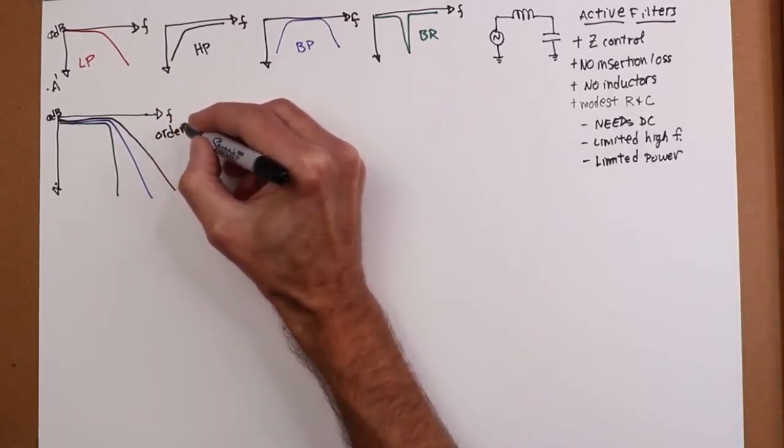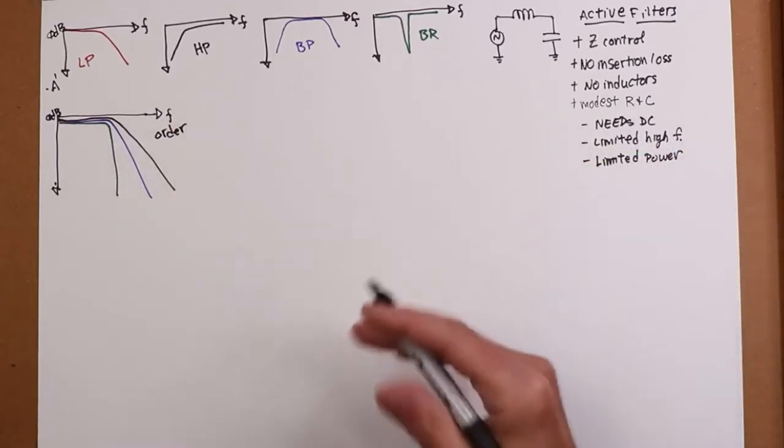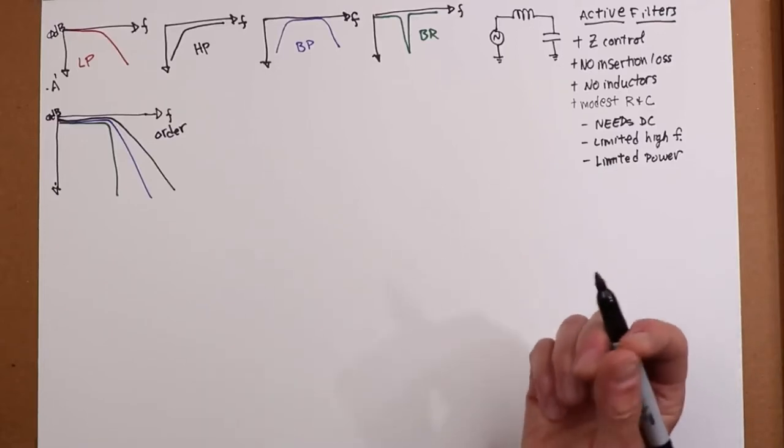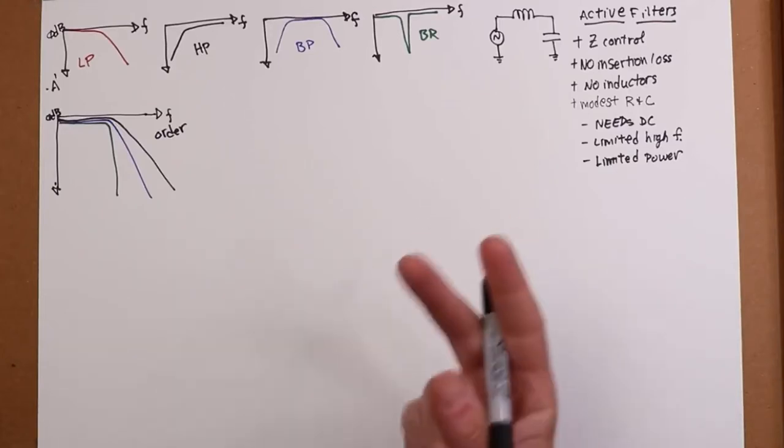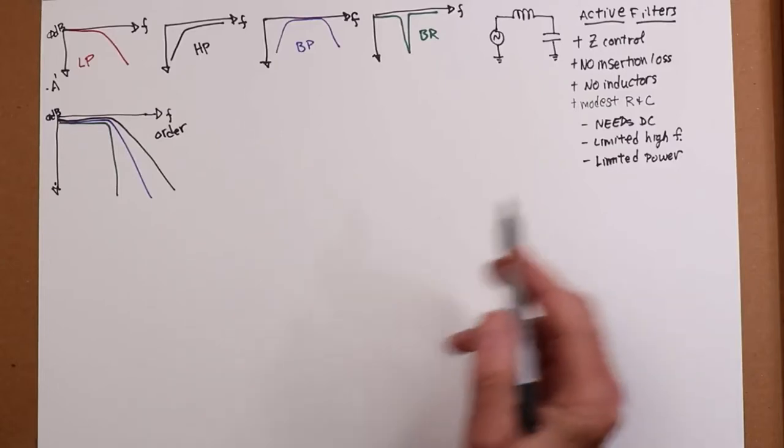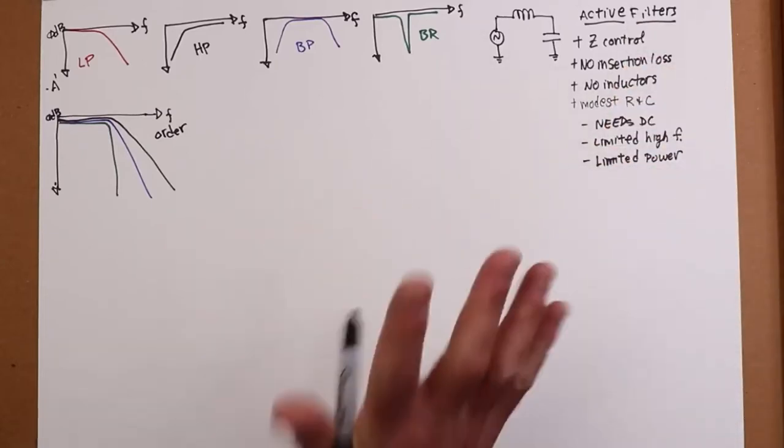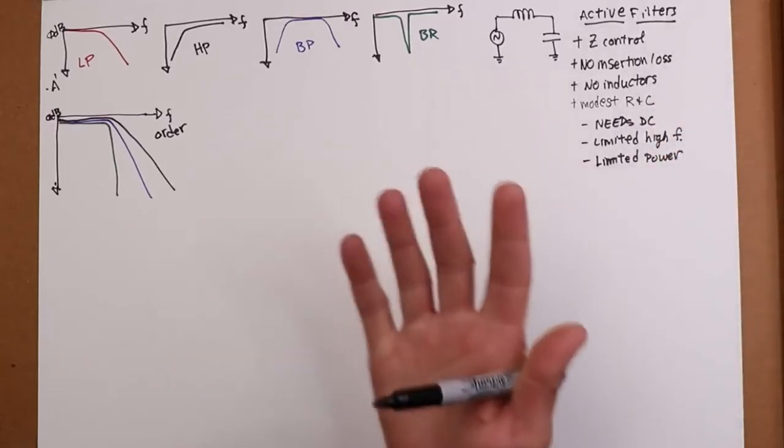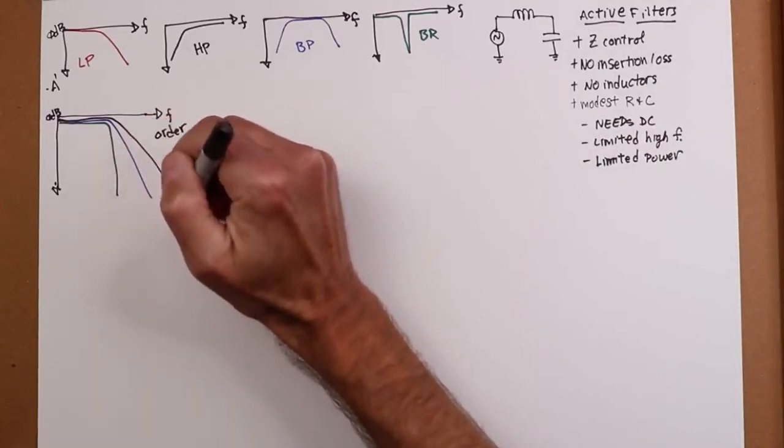This we refer to in terms of the order of the filter. First order, second order, third order, fourth, fifth order, whatever. Order indicates a couple of things. First thing is it tells you the minimum number of reactive components you need to realize the filter. So a second order filter needs two components. If it was passive, it would need a capacitor and an inductor and an active filter that could be two capacitors. So a fifth order filter, active filter would need five capacitors.